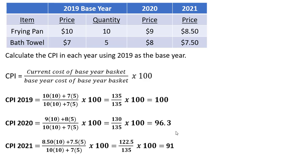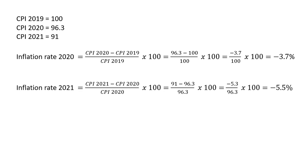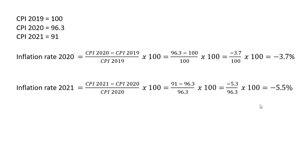Now let's calculate the inflation rate, or what amounts to the deflation rate in this economy. Here are our CPIs for each year. The inflation rate in 2020 is given by the CPI in 2020 minus the CPI in the previous year 2019, all divided by the CPI in 2019, multiplied by 100 to get it out of decimal format. Plugging in our values and simplifying, inflation here was minus 3.7%. So this economy experienced deflation — on average, prices fell almost 4% over 2020. In 2021, the inflation rate is going to be the percentage change as we go from 96.3 to 91. Doing the calculation, we have an inflation rate of minus 5.5%. So prices on average fell almost 6% in year 2021.